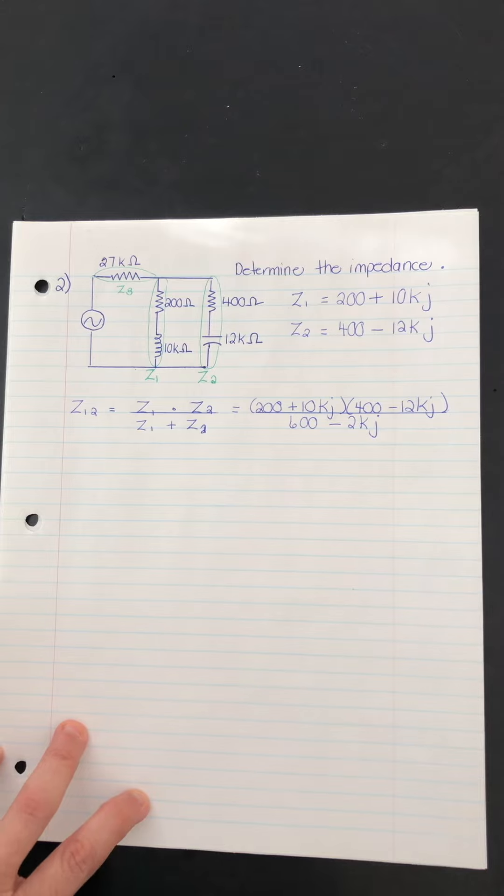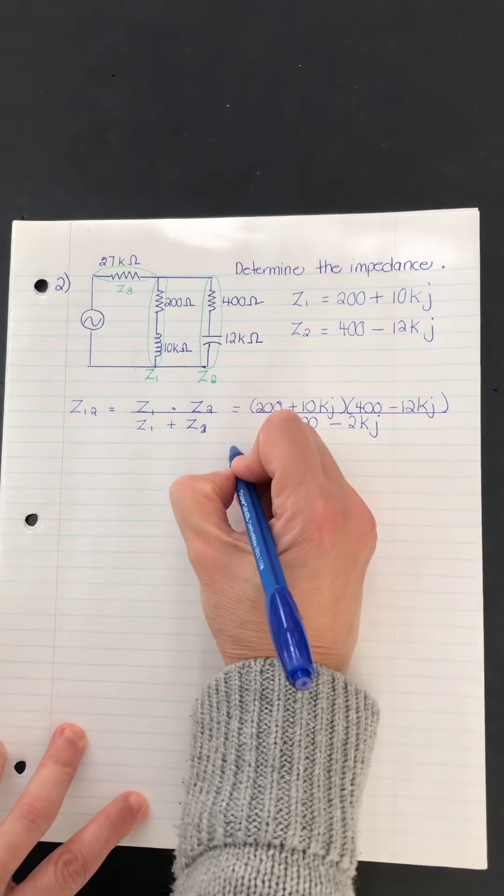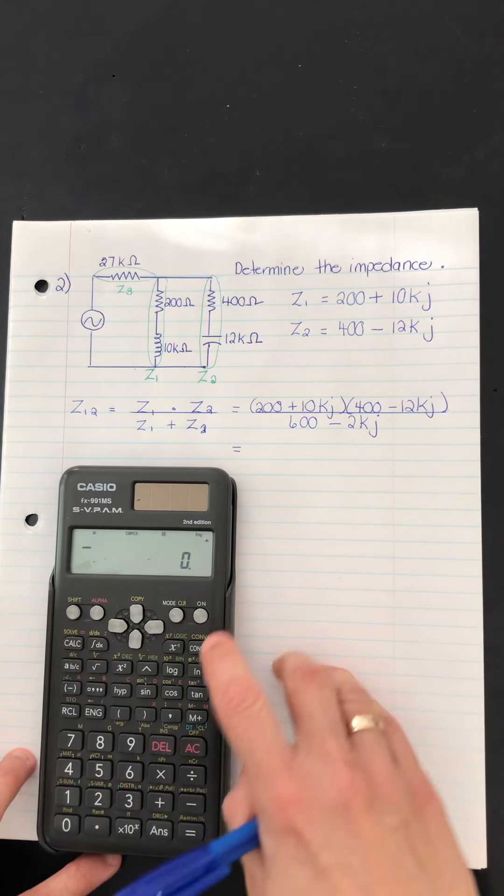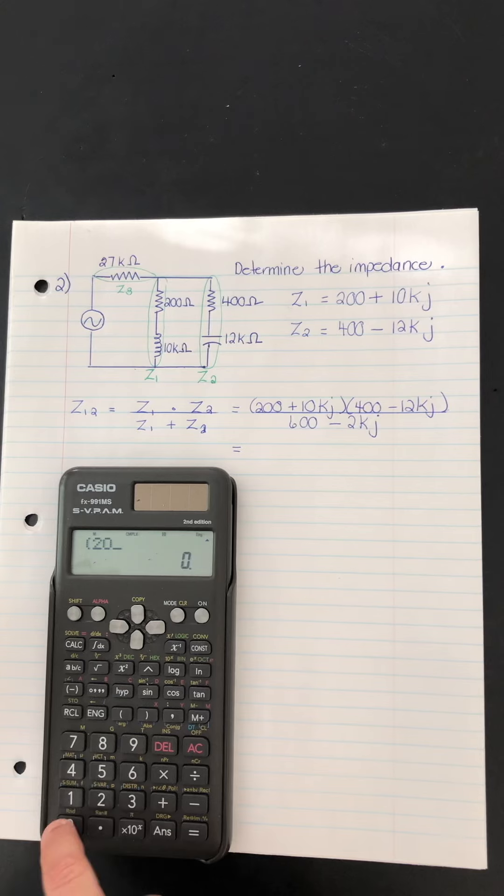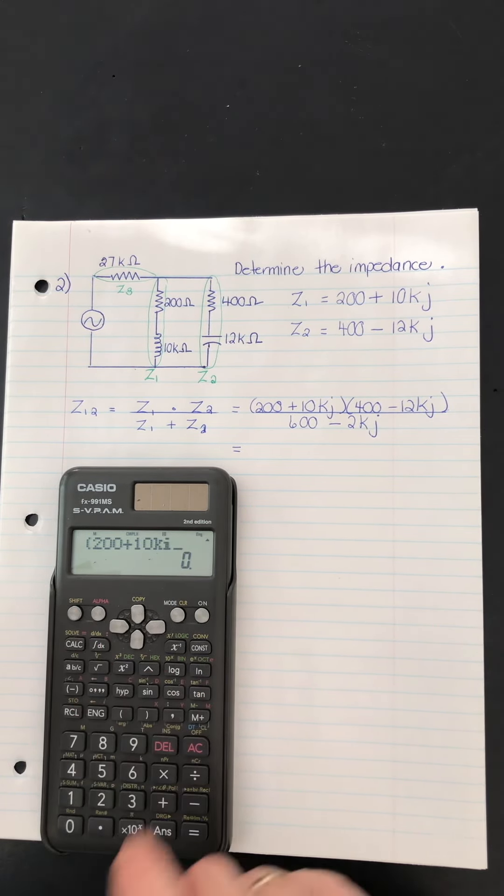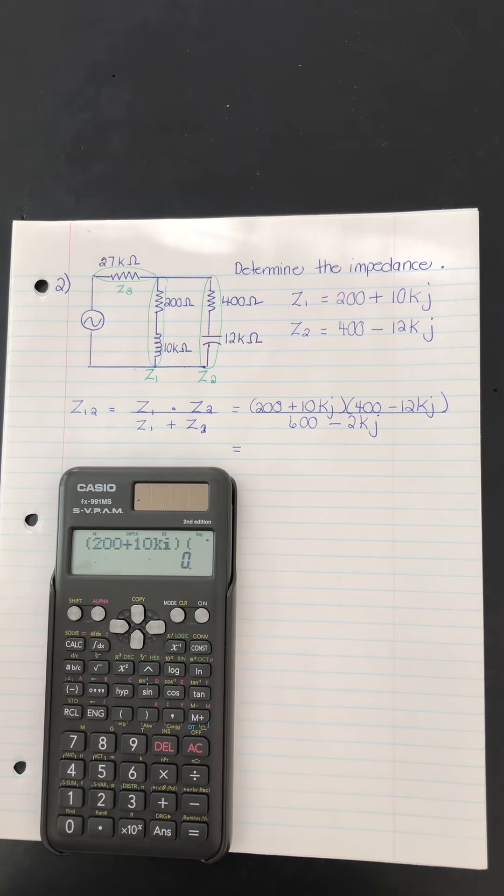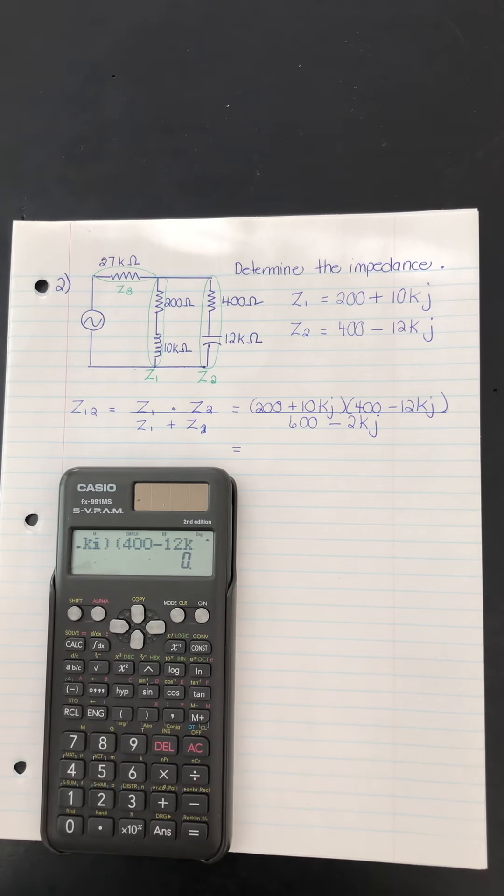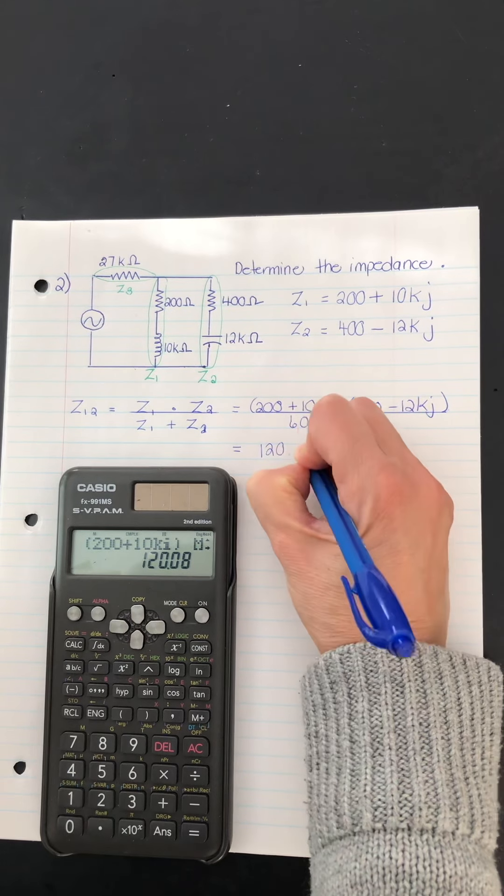Just like that. So we're all set. I'm going to take the calculator now and do that multiplication in the numerator. So let's do that. And I'll show you it here as well. So start with your bracket and I have to write 200 plus 10 Kilo I. Close the bracket. Multiplication is implied, but we do need the bracket. 400 minus 12 Kilo I. Close it. Ready? Push equals. That's the real number part.